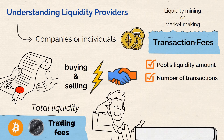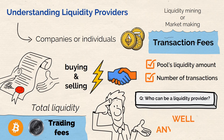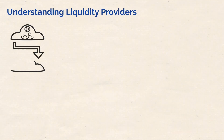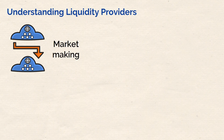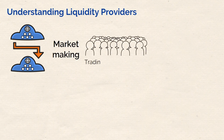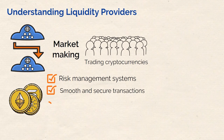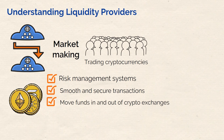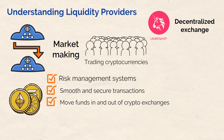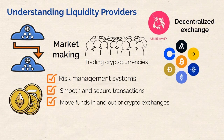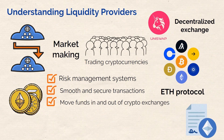Who can be a liquidity provider? Anyone can. With automated market makers, anyone can participate in market making, which has made it more accessible for people to get involved in trading cryptocurrencies. Additionally, crypto liquidity providers have advanced risk management systems, ensuring smooth and secure transactions for traders looking to move funds in and out of crypto exchanges. Uniswap has emerged as a very well-known decentralized exchange, with a huge amount of crypto assets in its liquidity pools. Uniswap built its protocol on Ethereum and uses smart contracts to manage these pools, letting investors trade cryptocurrencies directly from their Ethereum wallets.